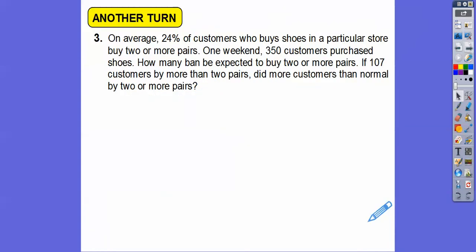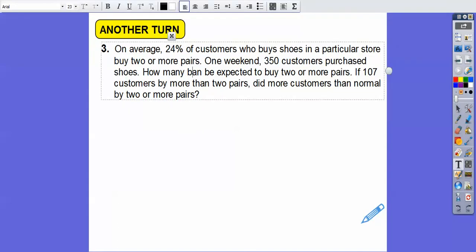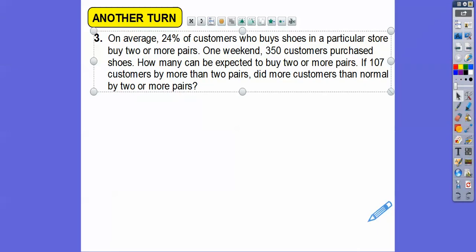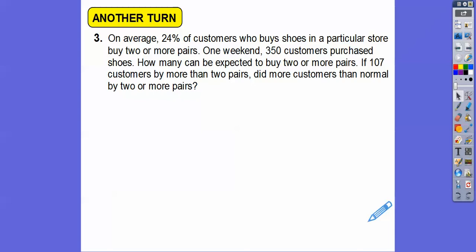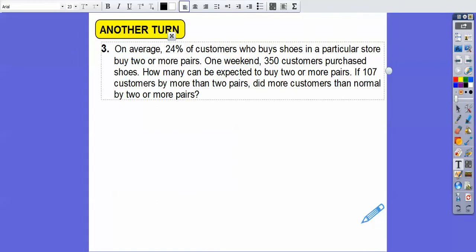All right. Let's try one more. On average, 24% of customers who buy shoes in a particular store buy two or more pairs. So one weekend, 350 customers purchase shoes. How many can be expected to buy two or more pairs? There's another question. If 107 customers buy more than two pairs, did more customers than normal buy two or more pairs?